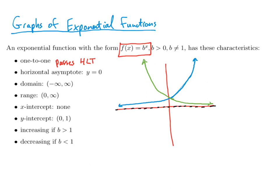In both cases, the domain is all real numbers. The range is from 0 to infinity. It has a y-intercept of (0, 1), so this point right here is (0, 1). It's increasing if b is greater than 1 — so the blue function, the increasing one, has b greater than 1.